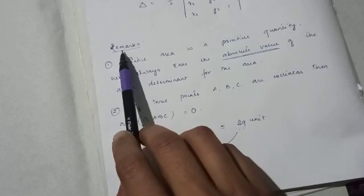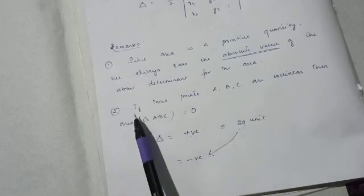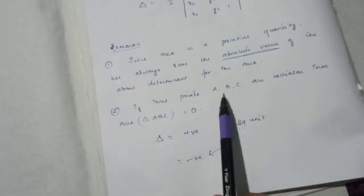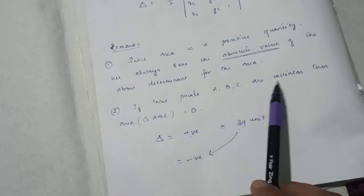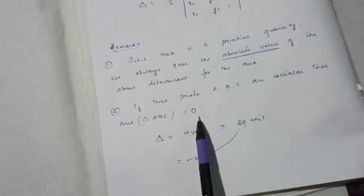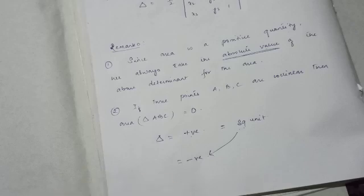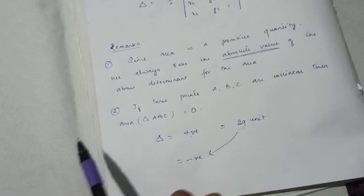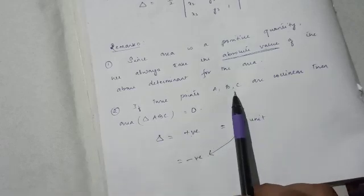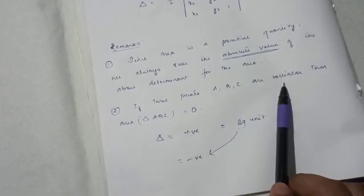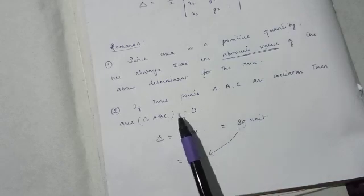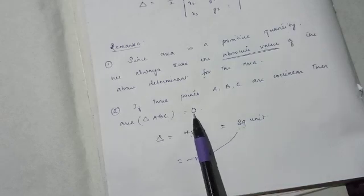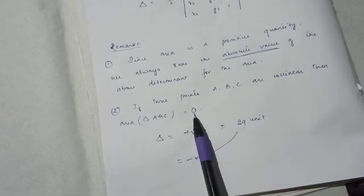Remark 2: If three points A, B, C are collinear, then the area of triangle ABC is equal to zero. In short, whenever three points are collinear, the area of the triangle formed is zero.